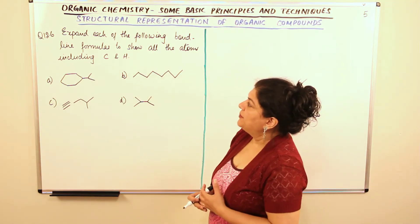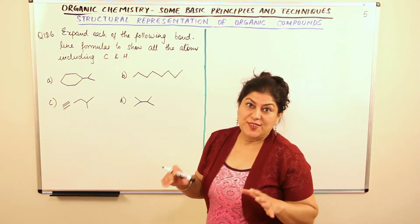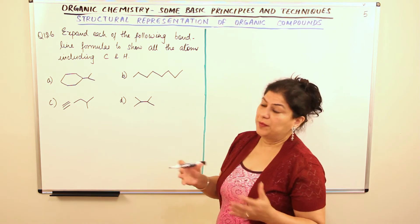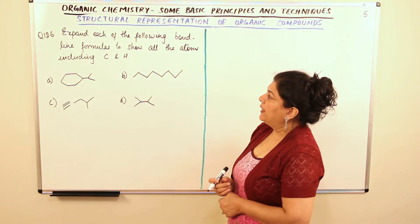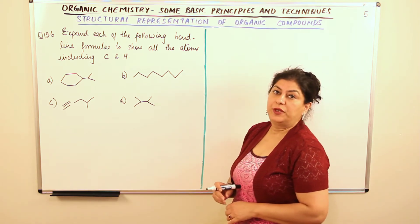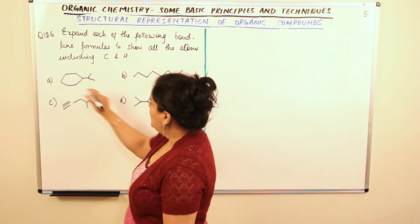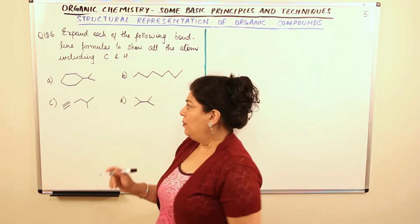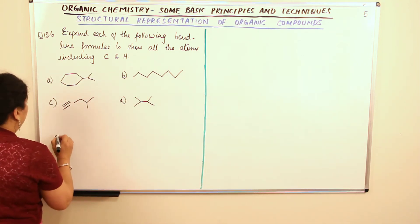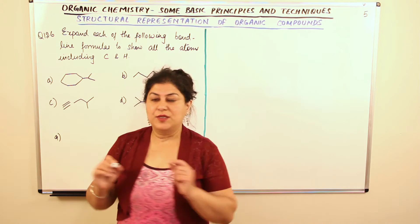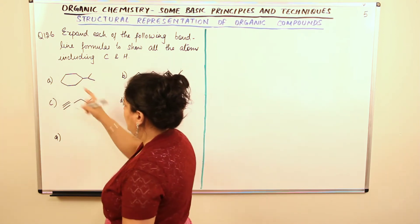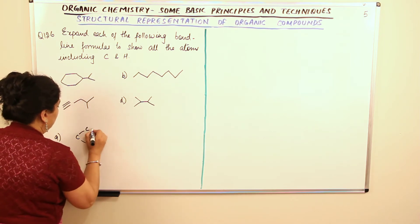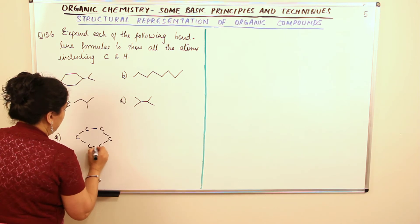Now this is question 12.6. Bond line notations have been given to you and you have to expand them to show all the atoms, including carbon and hydrogen. These are four compounds given to us and we have to expand them writing every atom in the molecule. Let's start with A. Wherever there is a joint, we'll be putting a carbon. There is a hexagon, so we'll be making a hexagon with carbons — carbon, carbon, carbon, carbon, carbon, carbon.